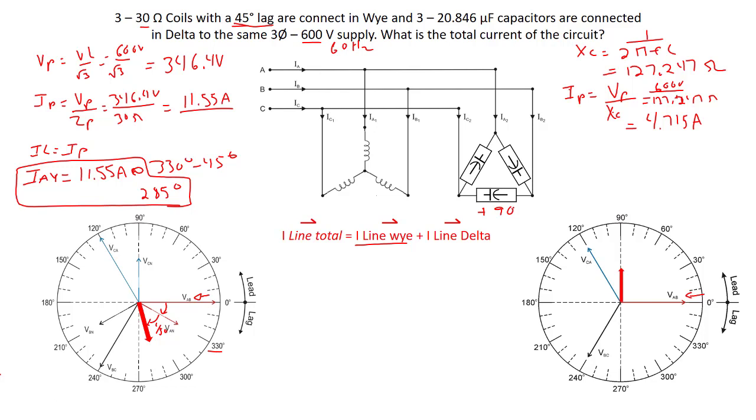So it's a leading current, so we have to go up 90 degrees and plot it leading. It's going to go right there. There's our I phase, IAB is right up here. Let's calculate line current now. We can use our root 3 formula because we have the same capacitors in each phase, so it's still balanced. I line equals I phase times root 3.